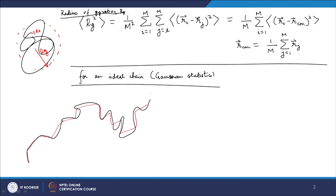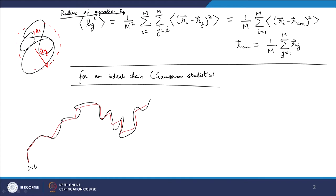Of course, if the number of segments is small there will be larger error, but if the number is large the approximation becomes more justified. In reality, a polymer chain is always continuous, not discrete. So we talk about a contour variable: instead of m discrete segments, we have a contour variable s running from s=0 to s=m. The summations over indices i and j are replaced by integrals over the contour variable.